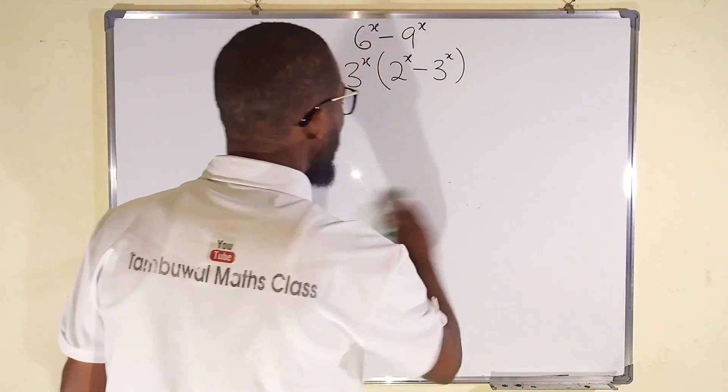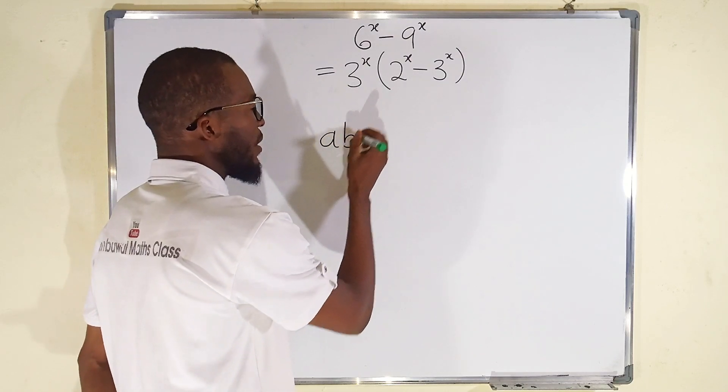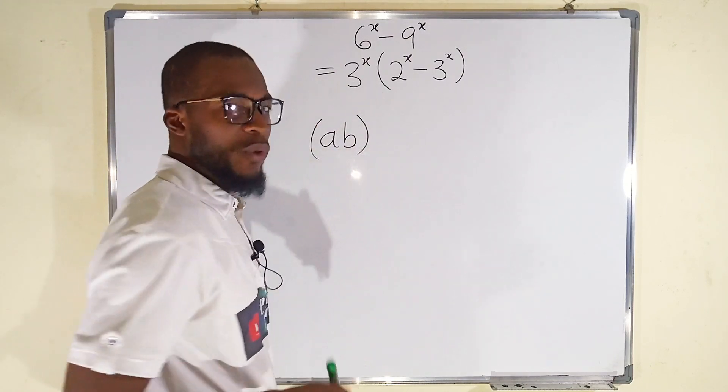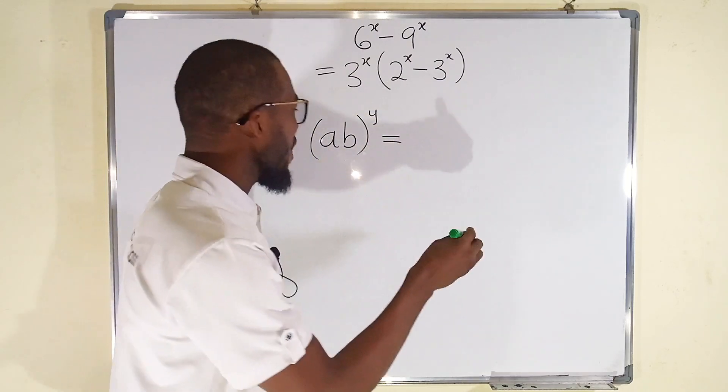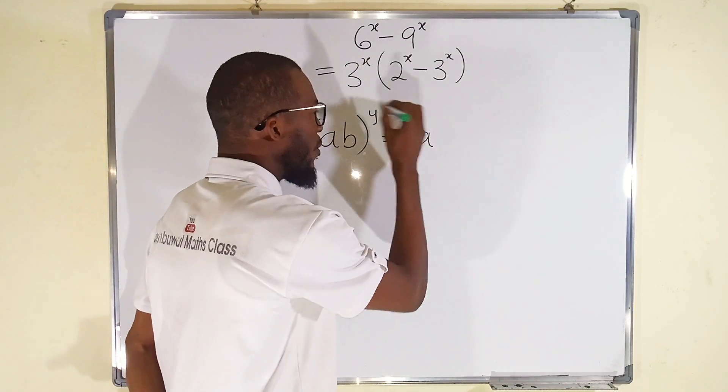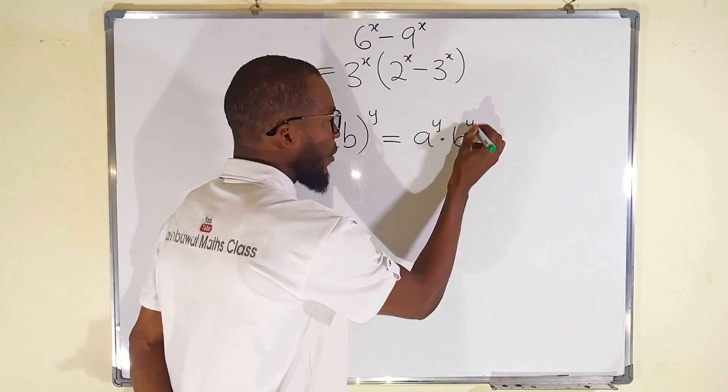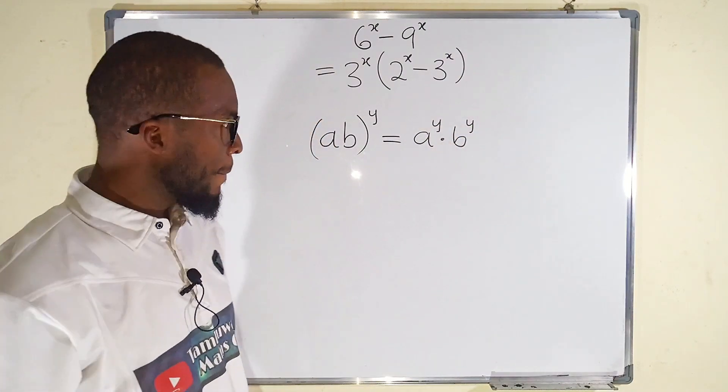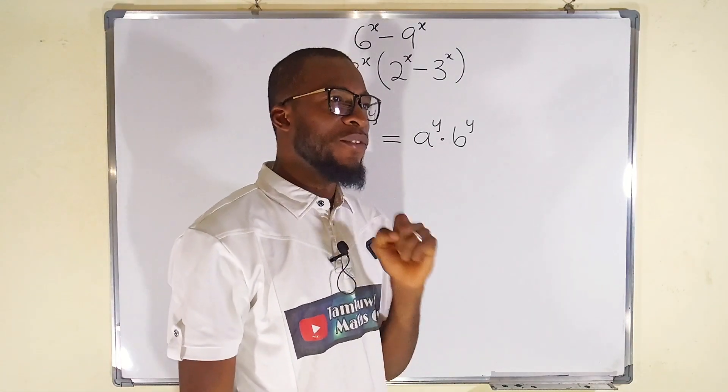Remember one of the laws of indices which says that if you have a multiplied by b, all raised to a single power, let's say y, this can be written as a to the power of y multiplied by b to the power of y. If this is true, let us make a substitution here.